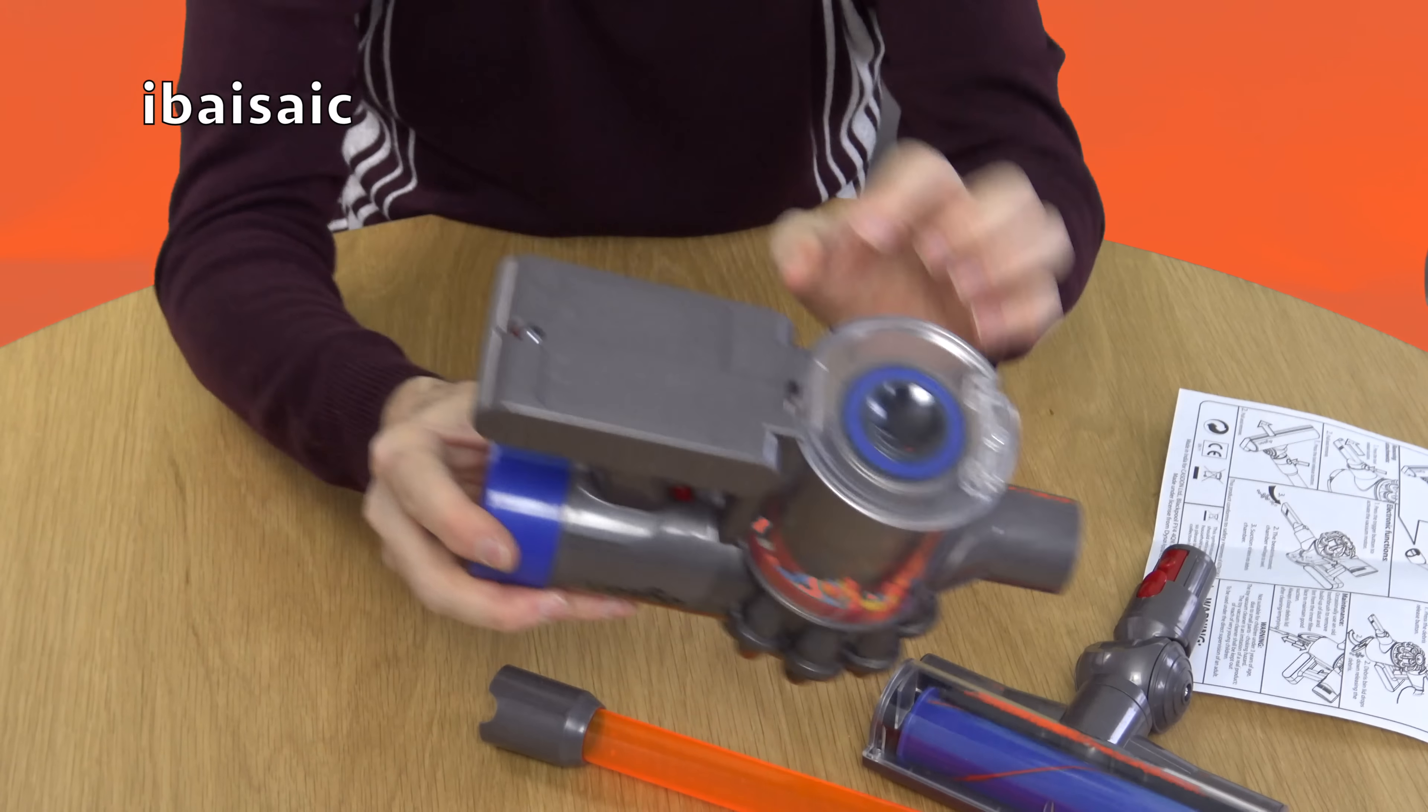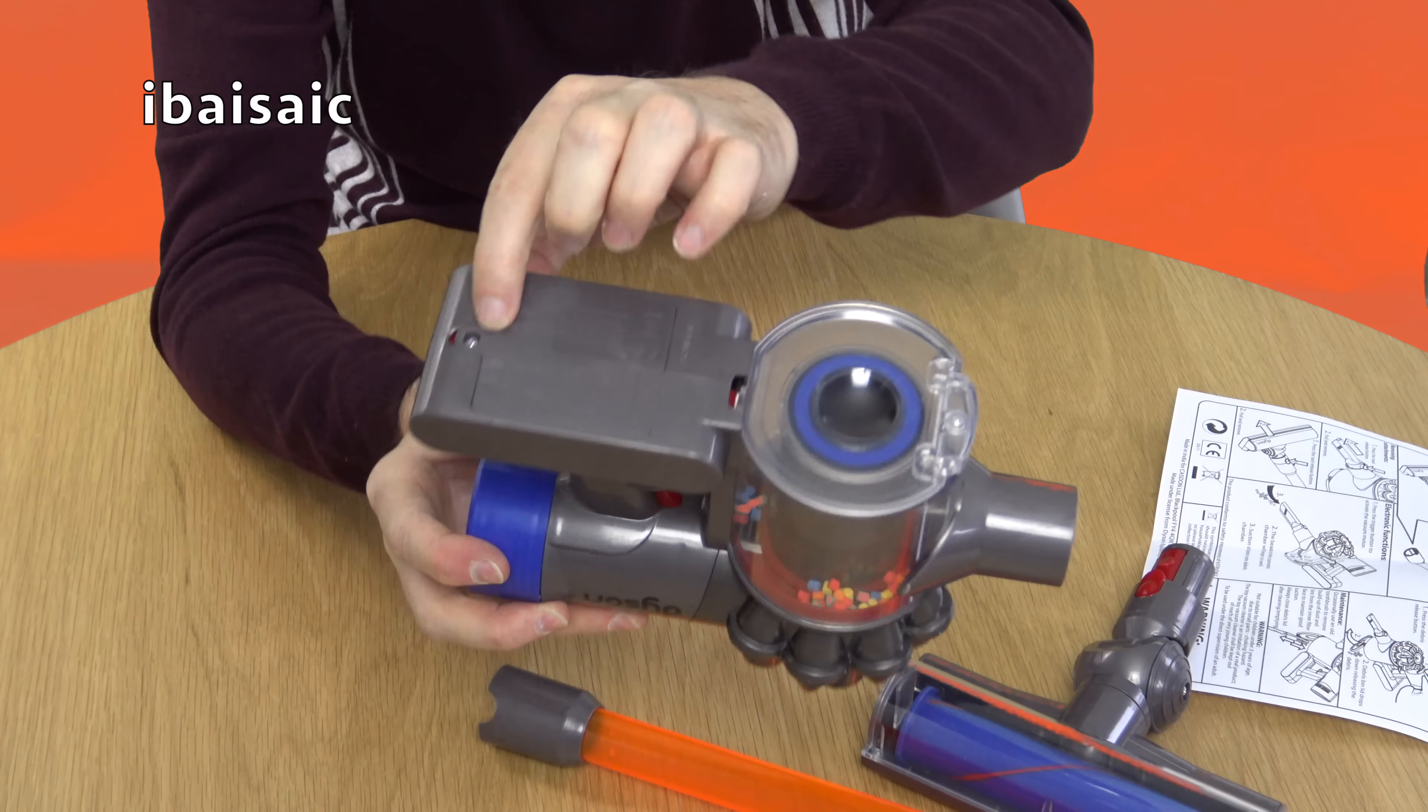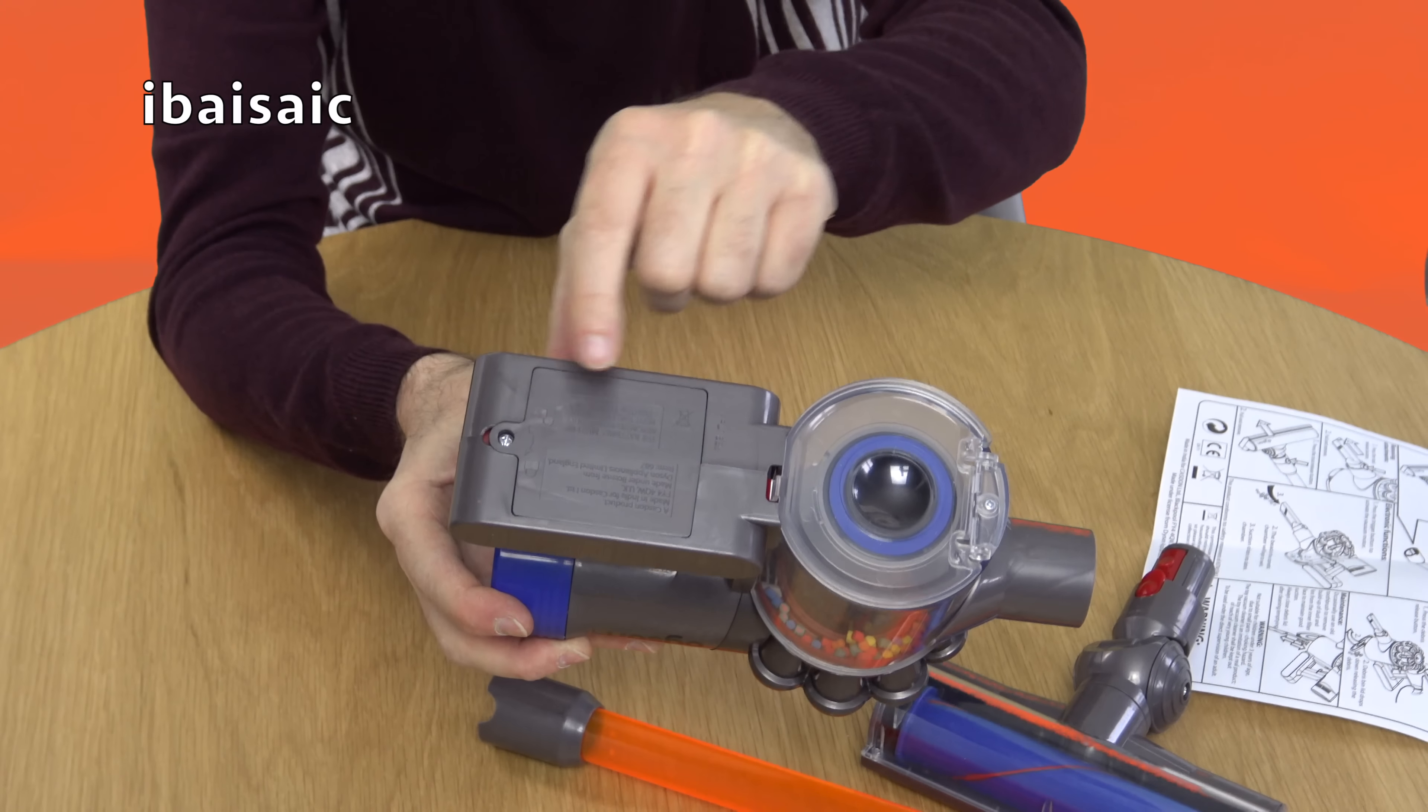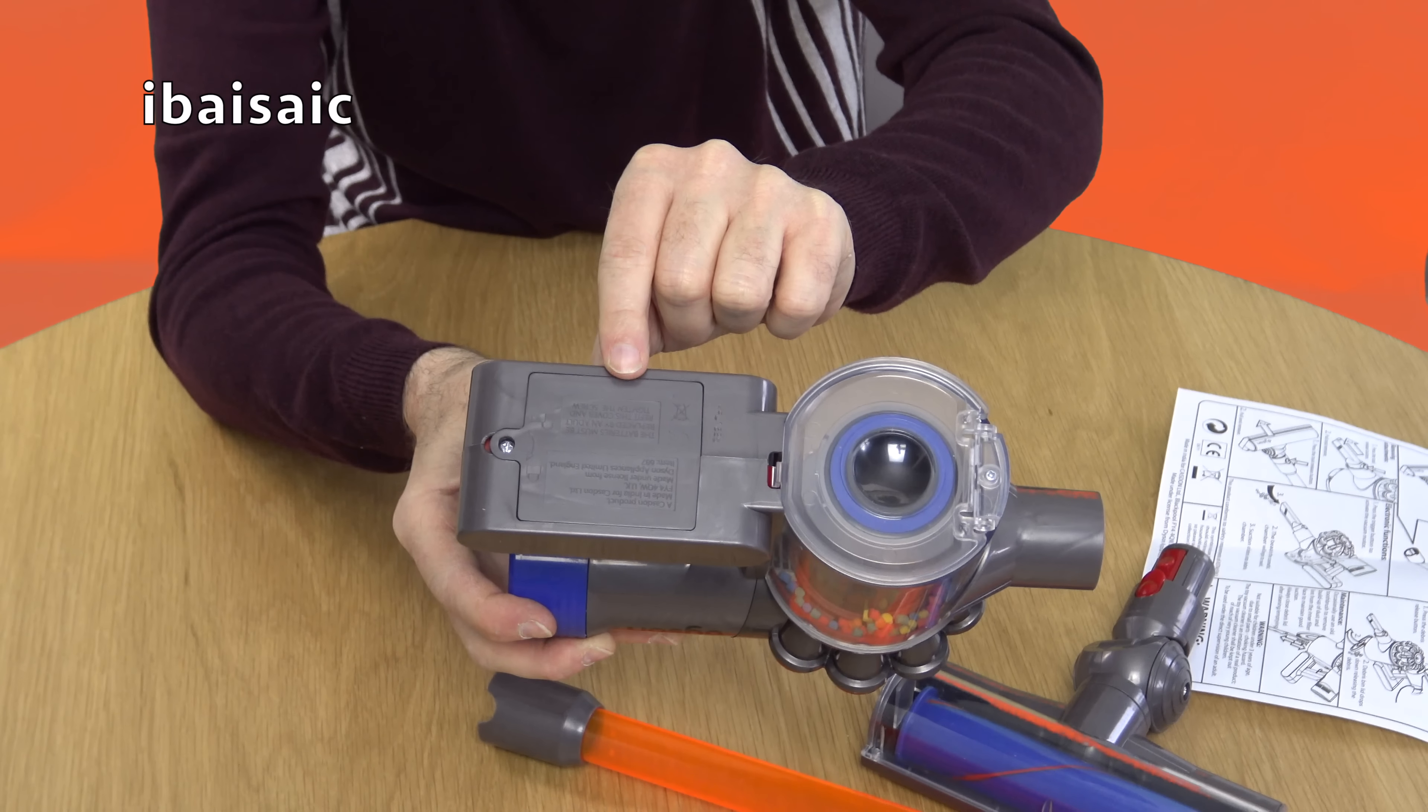Well, it looks like I need a screwdriver because the batteries fit in this compartment here. So we're going to need a small cross head screwdriver to undo the cover, and then I can put the three double A batteries inside.